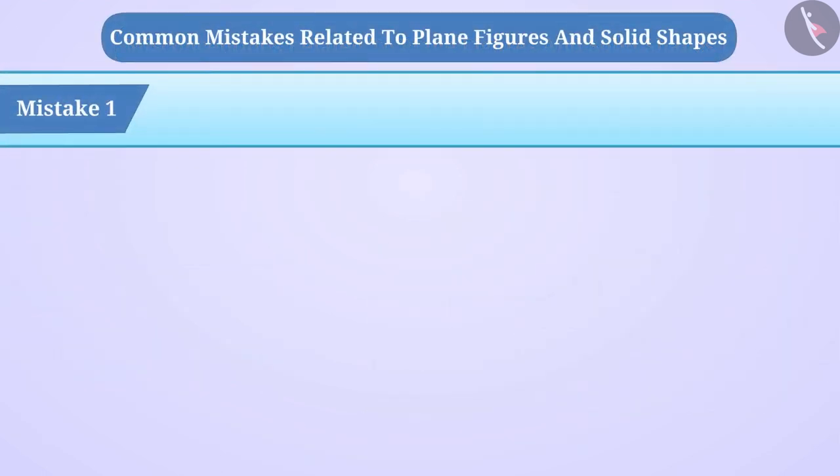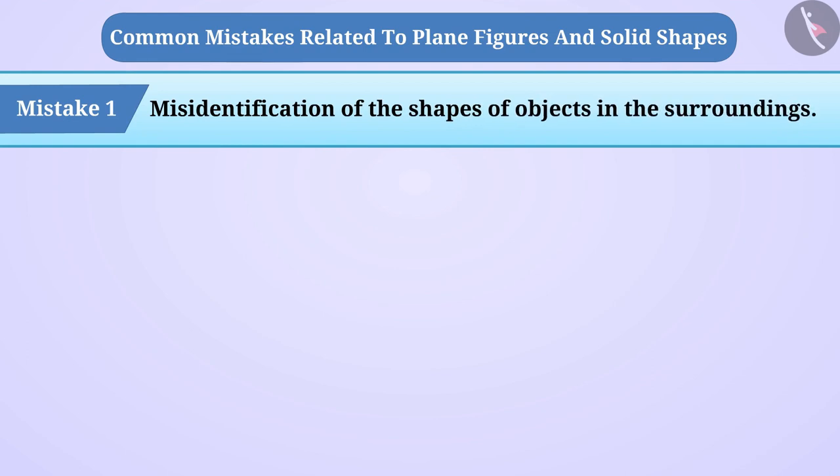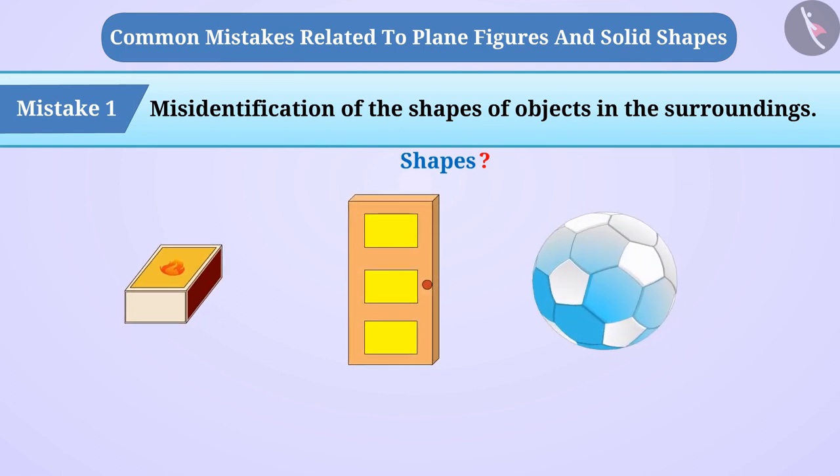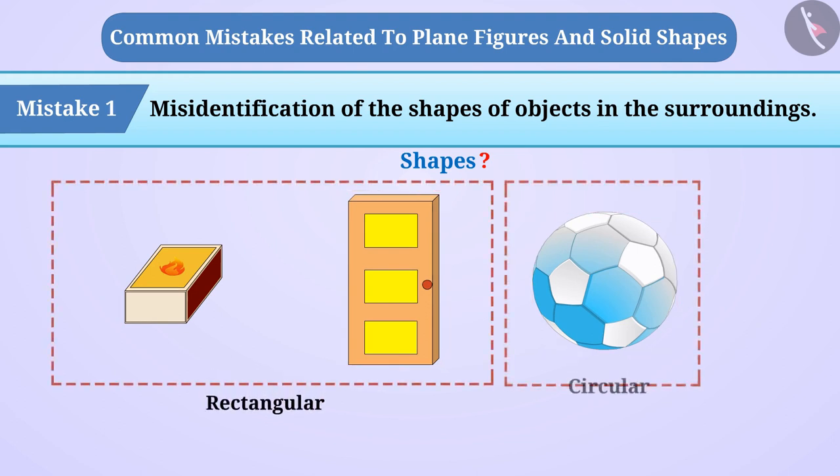Mistake 1. Misidentification of the shapes of objects in the surroundings. If children are asked the shape of the matchbox, door, and ball, then they say that matchbox and door is rectangular and the ball is circular.